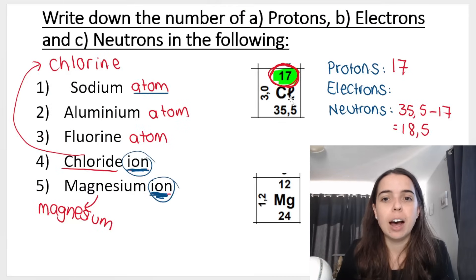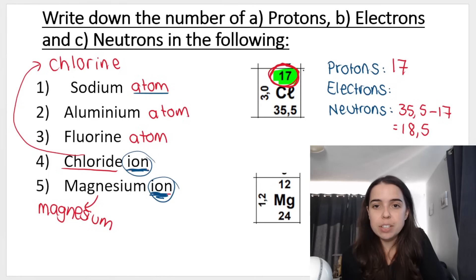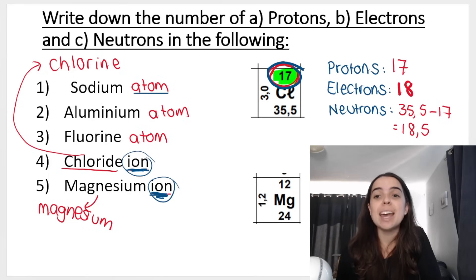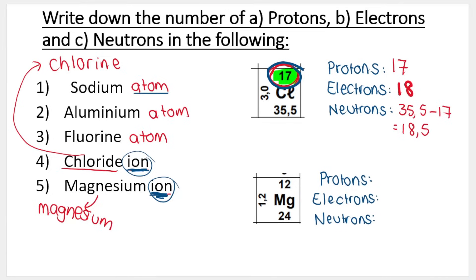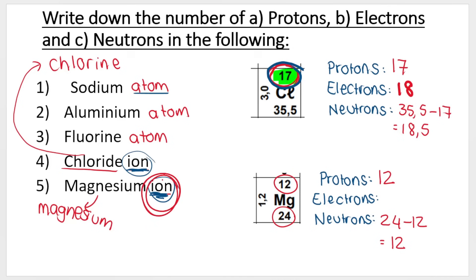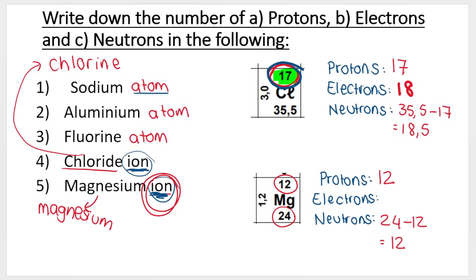So for the chloride ion: chlorine is in group seventeen and gains one electron. The periodic table says 17 electrons for a neutral atom, but because it gains one electron it becomes 18 electrons. For the magnesium ion: 12 protons, and the number of neutrons is atomic mass minus atomic number — which is also 12. If it were a neutral atom it would have 12 electrons, but magnesium is in group two, so it has a plus two charge, meaning it lost two electrons — giving it 10 electrons.